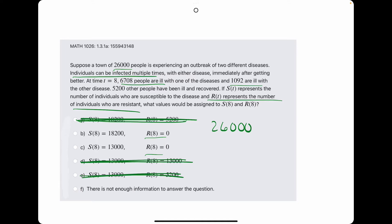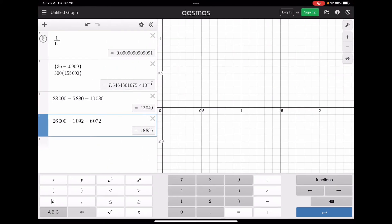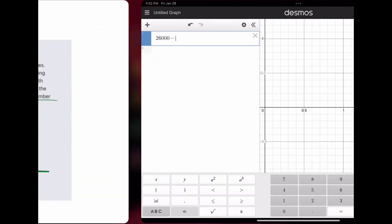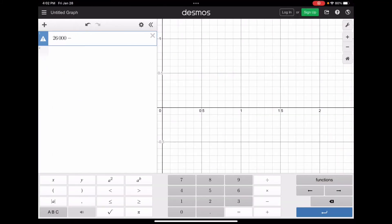So, starting with 26,000, we are just subtracting the 6,708, or 6,708, and we are also subtracting the 1,092. And that's it. So, let's get rid of some of this here. Alright, so 26,000 minus 6,708 minus 1,092.